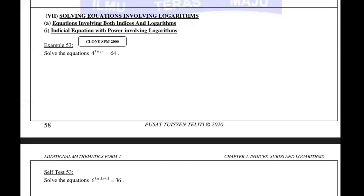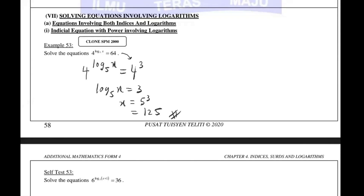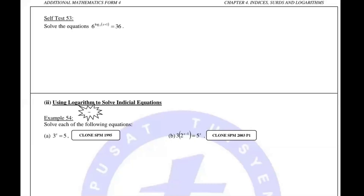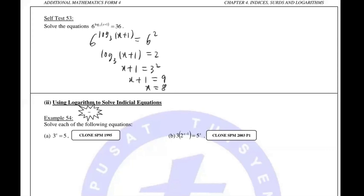Now this one you really just use change of base in indices. We know 4 and 64 can be written in the same base. 64 is 4^3, so by comparison x is 5^3. 5^3 is 125. For the next: change 36 to 6^2. So log base 3 of (x+1) equals 6^2 — wait, log base 6^(x+1) of 3... that means log base 3 of x+1 is 2. So x+1 is 3^2 = 9, meaning x = 8.